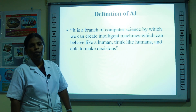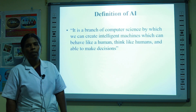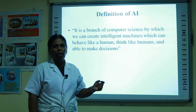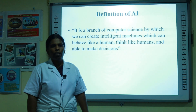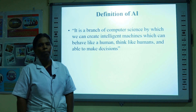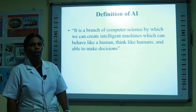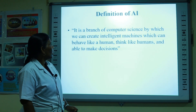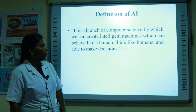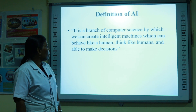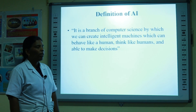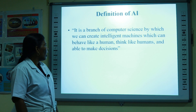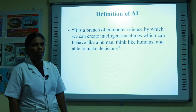Next, we are going to discuss the definition of AI. AI is the branch of computer science that deals with creating intelligent machines which can behave like a human, think like a human, and are able to make decisions.